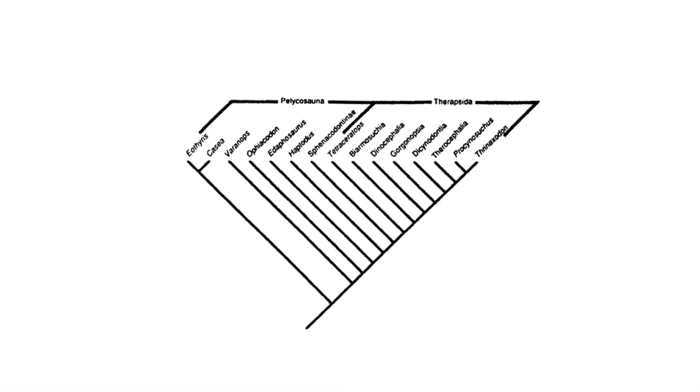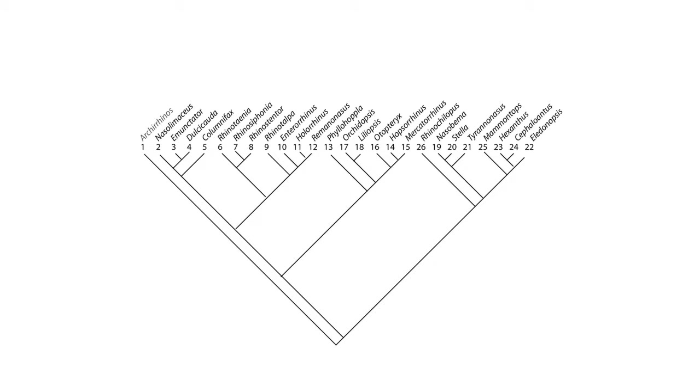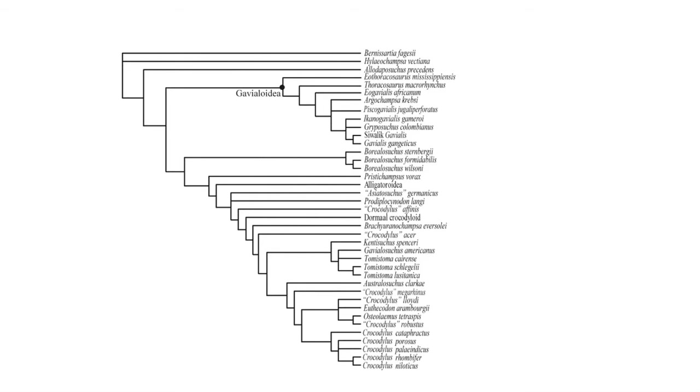Cladograms come in all different sizes and shapes — some with lines coming off at diagonals, others with a squared-off branching pattern. The order that the names appear at the top or on the side of the tree matters very little, as each branch can be twisted such that the same cladogram can depict a different order of names. It is best not to look at the order of names but the branching pattern itself.